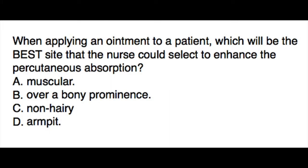Let's look at this question: when applying an ointment to a patient, which will be the best site that the nurse could select to enhance the percutaneous absorption? The answer choices are: A) muscular site, B) over a bony prominence, C) non-hairy site, or D) armpit. You can pause, answer the question, unpause, then see the correct answer.